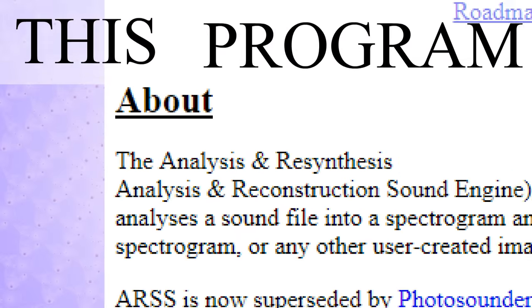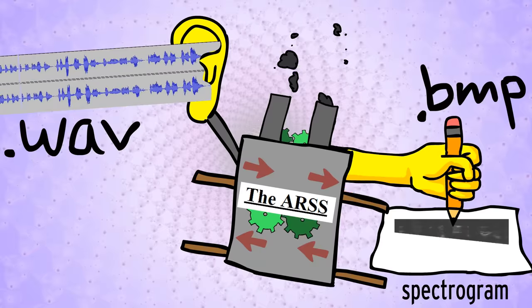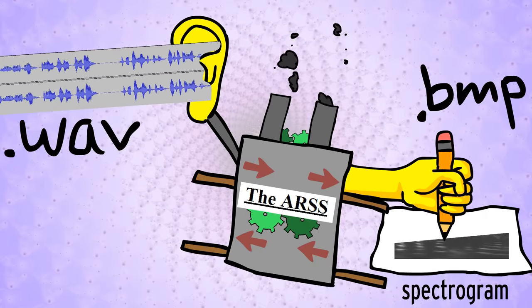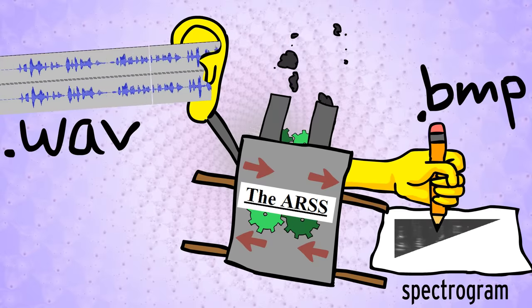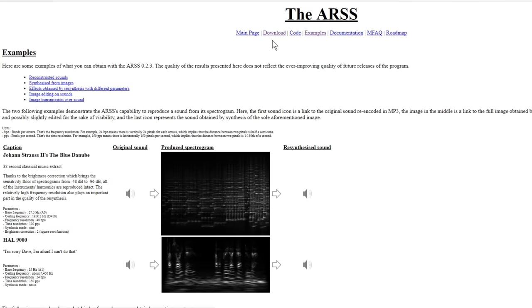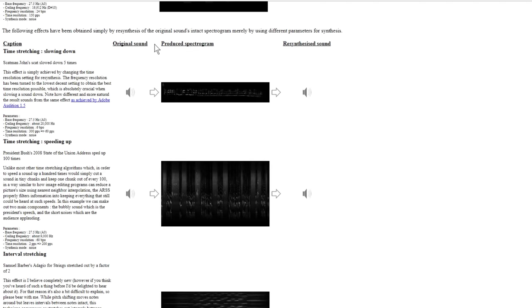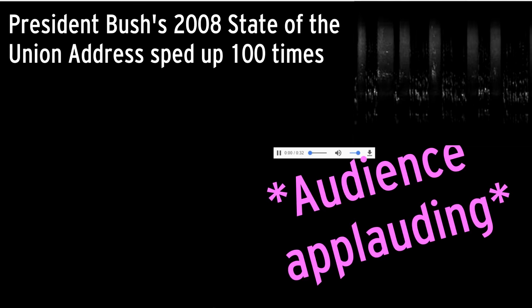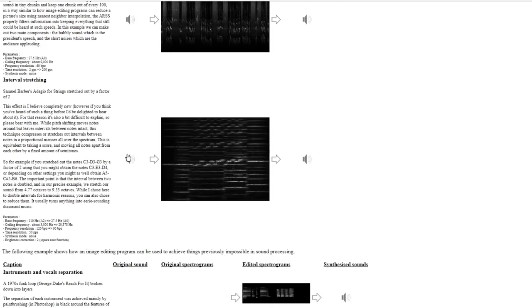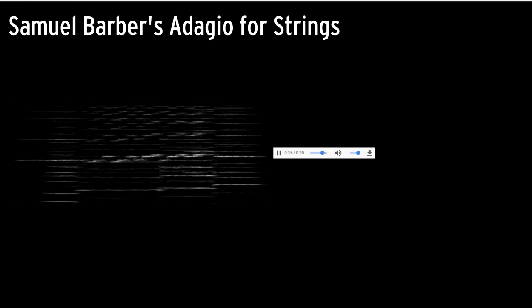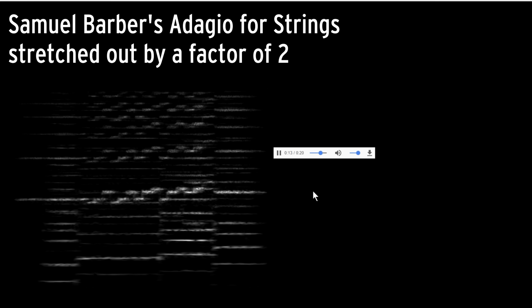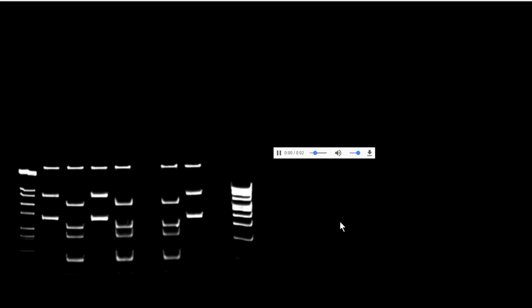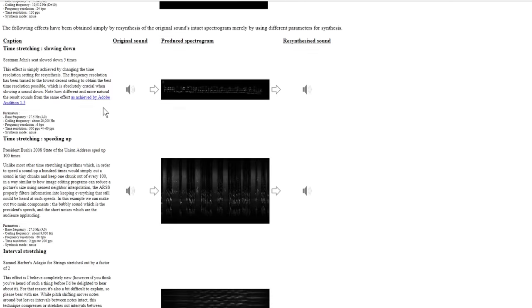There's this program called the Analysis and Resynthesis Sound Spectrograph, written by Michael Ruzik in 2008. Basically, ARSS is a program that can listen to any WAV file and draw its corresponding spectrogram by figuring out what frequencies are vibrating at what time. On his website, Michael Ruzik lists some cool experiments he's tried. Some of these experiments are only possible when you play with the image files instead of audio files, including time-stretching audio, time-squishing audio, stretching pitch intervals, turning real-world images into sound, and even converting an image of Lena into sound, and then back into Lena.